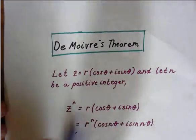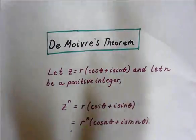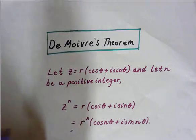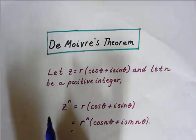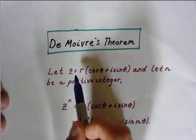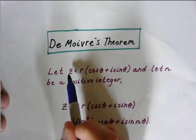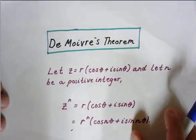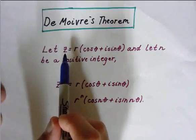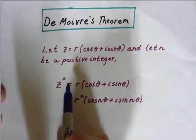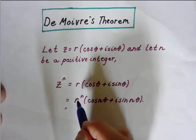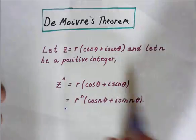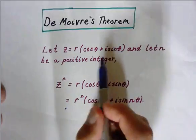Hey everyone, welcome to De Moivre's Theorem. What this theorem is going to allow us to do is expand or raise complex numbers to a power, and the complex number is going to be written in polar form. Here's the polar form of a complex number, and n is going to be an integer. If we want to raise our polar form of a complex number to the n power, all you're really doing is raising your radius to the n power and multiplying your angle by whatever you're raising your complex number to.